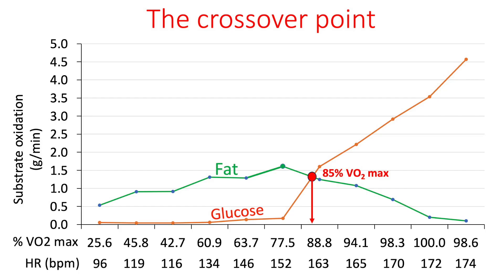This next graph displays my VO2 max test data, showing that my crossover point was also at approximately 85% of VO2 max, which is consistent with a high rate of fat oxidation that is typical of someone adapted to a low-carb diet. I also want to draw attention to the fact that I plotted both the percentage of VO2 max and my heart rate in beats per minute on the x-axis, which allows me to use heart rate as an indication of the exercise intensity at which my body shifts substrate preference.